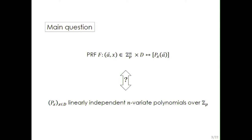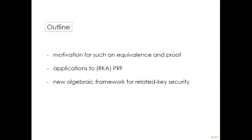The question we address in this paper is: given a function whose outputs are defined as the evaluation of multivariate polynomials on the key A, is this function a pseudorandom function if and only if the family of multivariate polynomials is a family of linearly independent multivariate polynomials? The question is on which assumption we base the security, since this is clearly true in the generic group model, and we want to show it is true under standard assumptions.